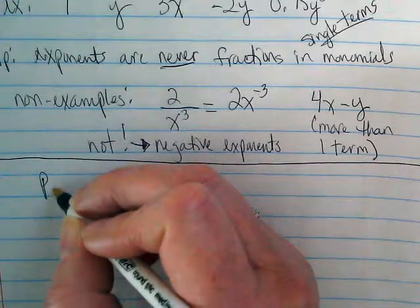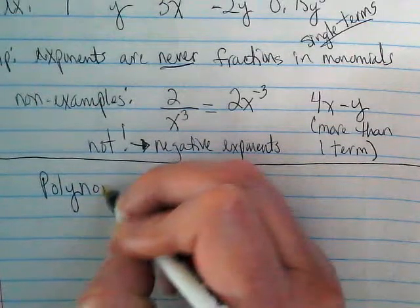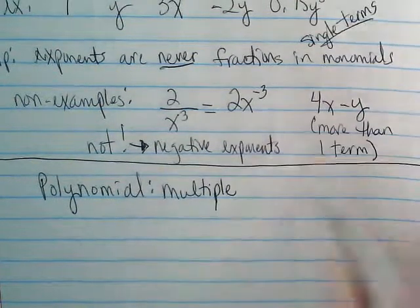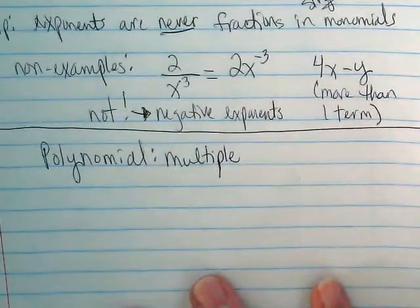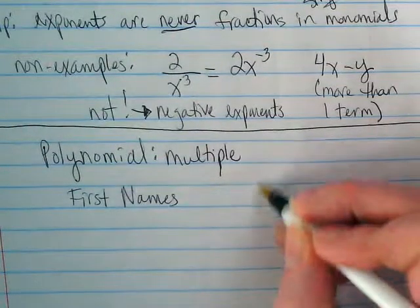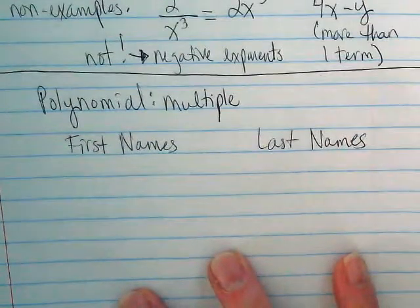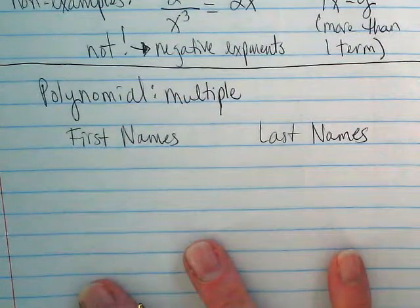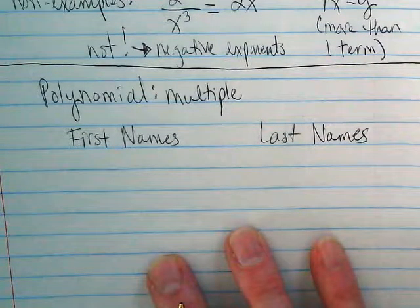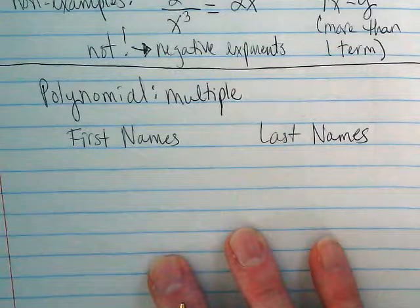If mono means one, poly means many or more than one. Polynomial means multiple. And they have what we call first and last names. My goal today is to get the notes down and tomorrow you're going to practice going through and saying what are some names or what are some degrees.